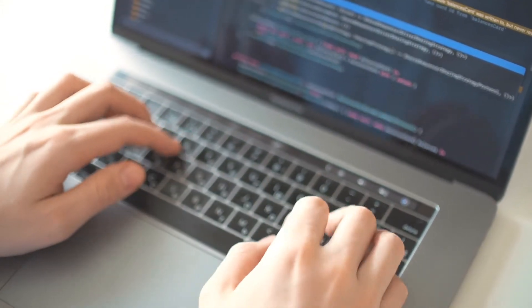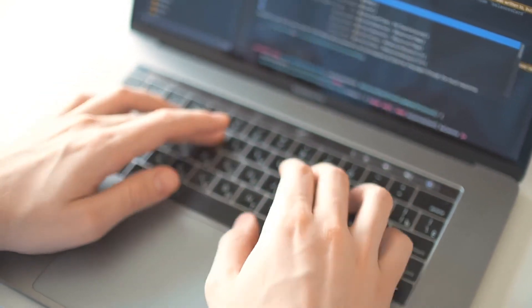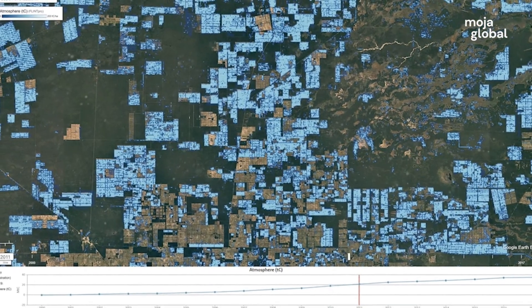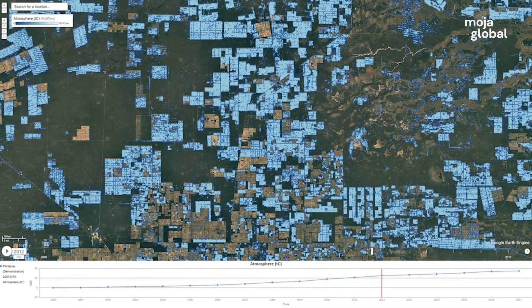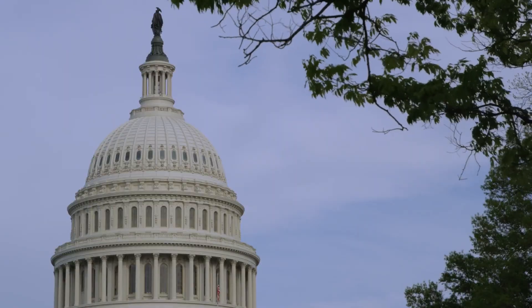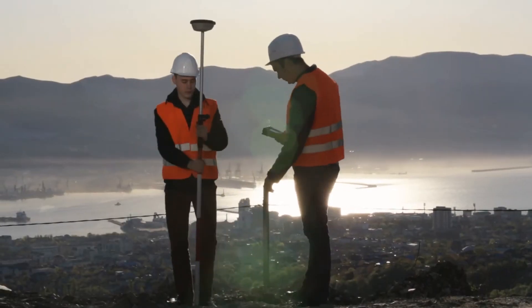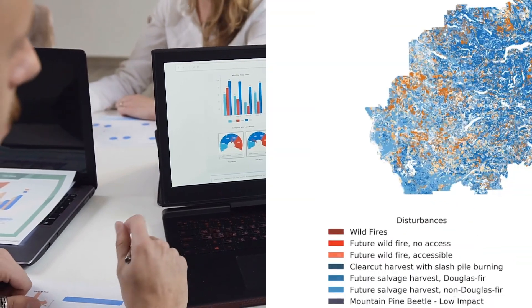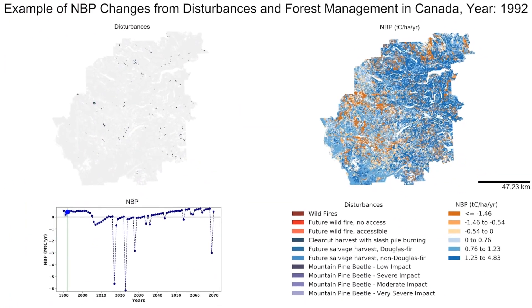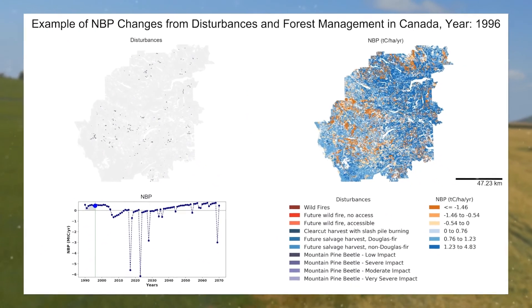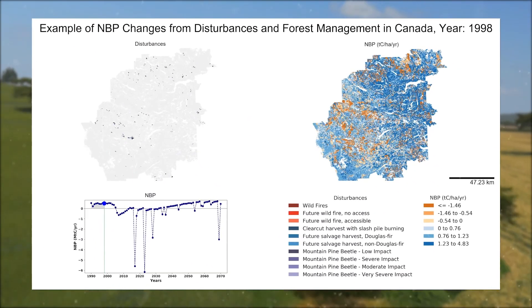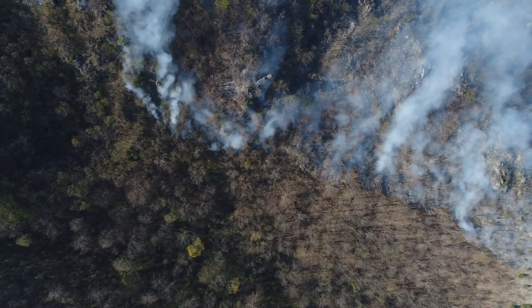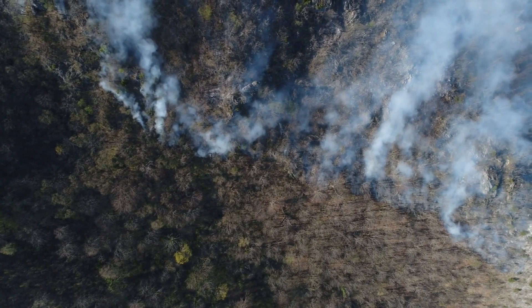FLINT is a modular, flexible open-source software that adds a new level of sophistication for an incredibly diverse group of users, from governments to private land managers and other businesses and stakeholders. It enables you to measure, report, verify, even forecast greenhouse gas emissions and removals from forestry, agriculture and other land uses.